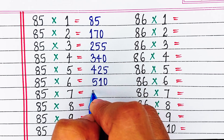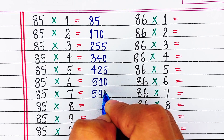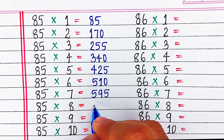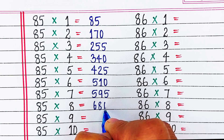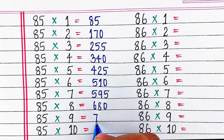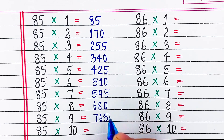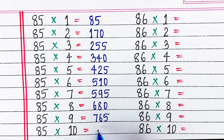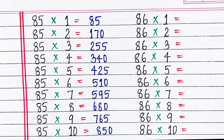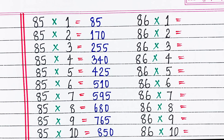85 6s are 510, 85 7s are 595, 85 8s are 680, 85 9s are 765, 85 10s are 850.